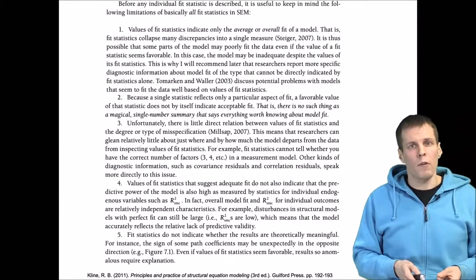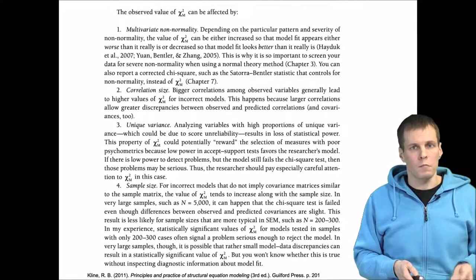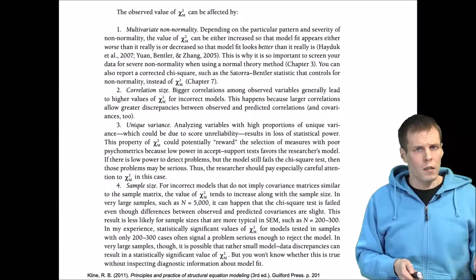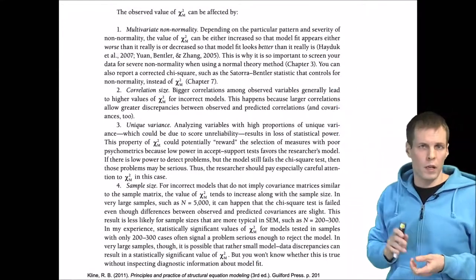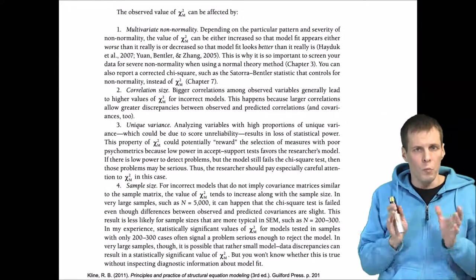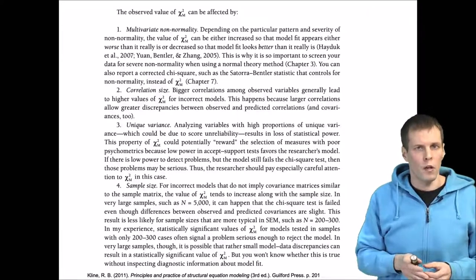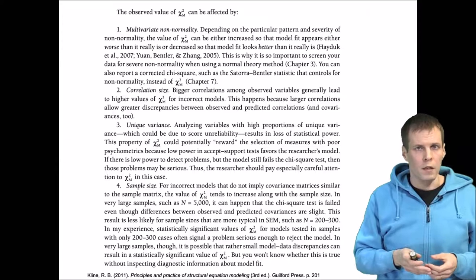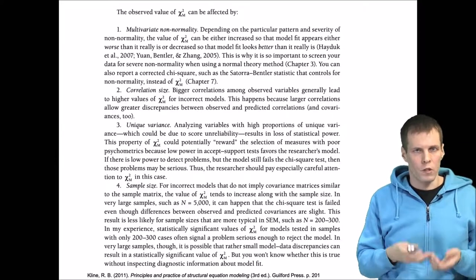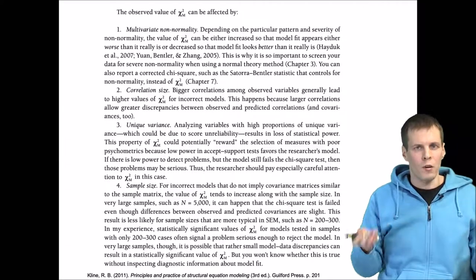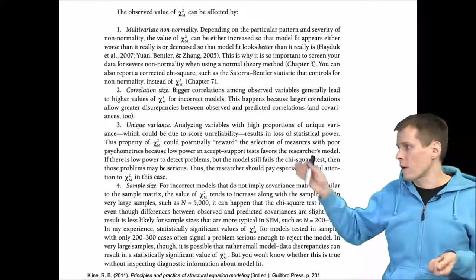Then there are issues related to the chi-square statistic itself. The chi-square depends on a couple of things. It depends importantly on multivariate normality. So the data, the observed indicators, must be multivariate normal for the normal chi-square to work well. If the data are substantially non-multivariate normal, then there are corrections that we can apply.